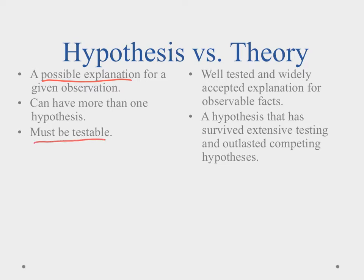However, a hypothesis has to be testable. That's why we do experimentation in science, and you can have more than one. When we test them in these experiments, we're seeing whether or not our explanation holds up to further observations. If these hypotheses survive all of this testing and outlast their competing ones, then it becomes what we call a theory.